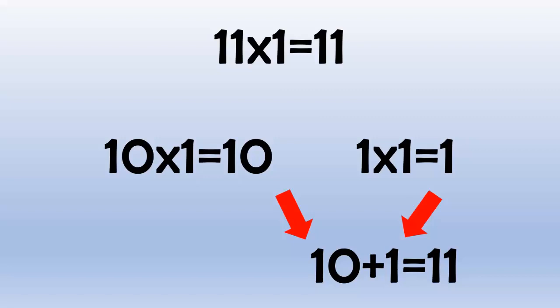11 times 3 equals 33, because 10 times 3 equals 30, and 1 times 3 equals 3, and 30 plus 3 equals 33.